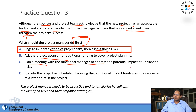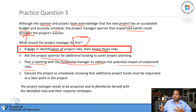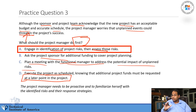Choice B — asking the sponsor for additional funding — is taking action without even knowing what these particular risks are. Choice C — planning a meeting with the functional manager — sounds good, but once again, don't go up the ladder right away. Choice D — execute the project and request funds at a later point — is kicking the can down the road, which you should have eliminated right off the bat. A project manager needs to be proactive, familiarize themselves with identified risks and their responses.